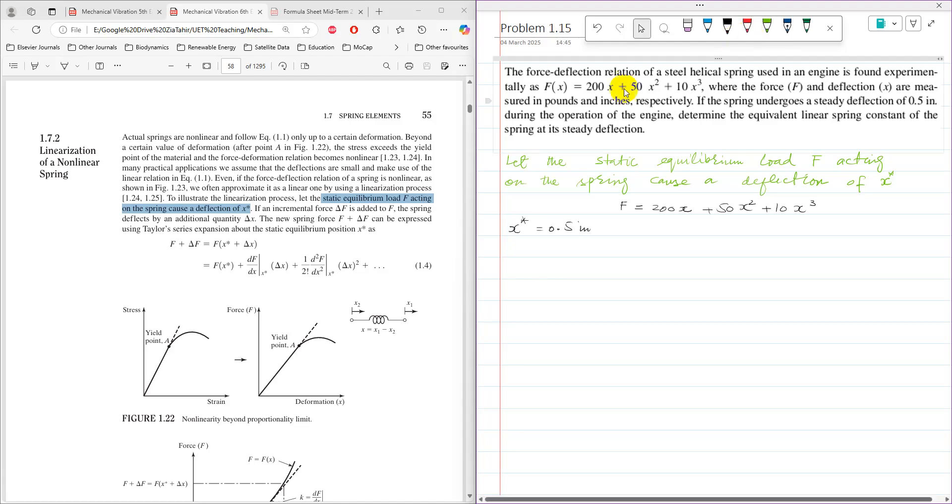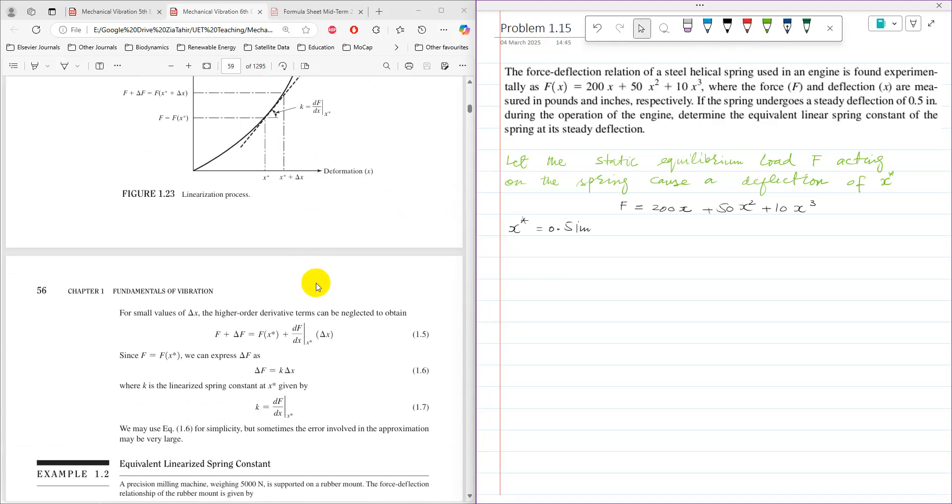The formula to find k for this problem is k = df/dx at x*. We need to first differentiate df with respect to dx, which gives 200 + 100x + 30x².